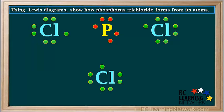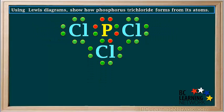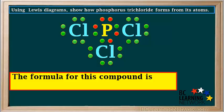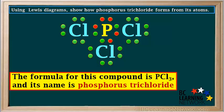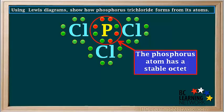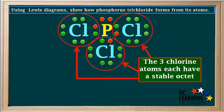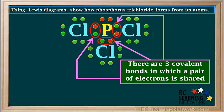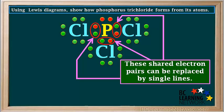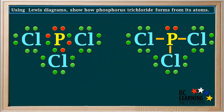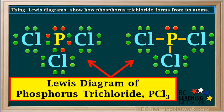Watch as they move together. So we end up with this. Notice this molecule has one phosphorus atom and three chlorine atoms, so its formula is PCl₃. And its name is phosphorus trichloride. Because electrons between the atoms are shared, the phosphorus atom fills eight electrons around it, so it has a stable octet. And each chlorine atom also has a stable octet. There are three covalent bonds, and in each one, a pair of electrons is shared. These shared electron pairs can be replaced by single lines, like this. So these are both correct ways of showing the Lewis diagram of phosphorus trichloride, PCl₃.